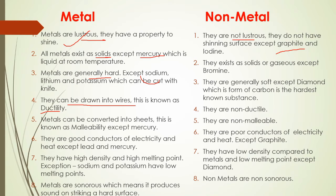Next, metals are good conductors of electricity and heat, with exceptions of lead and mercury. Non-metals are poor conductors of electricity, with exception of graphite which conducts electricity. Metal has high density and high melting point, but non-metal has low density and low melting point compared to metal. Exceptions: sodium and potassium are not high density metals; diamond is an exception among non-metals. Metals are sonorous — if we beat them they produce a sound — but non-metals are non-sonorous.